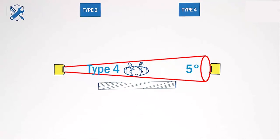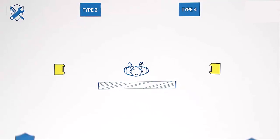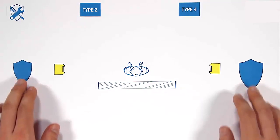Type 4 sensors discover failures within the response time, but type 2 sensors wait until the next test rate. This makes type 4 devices safer.